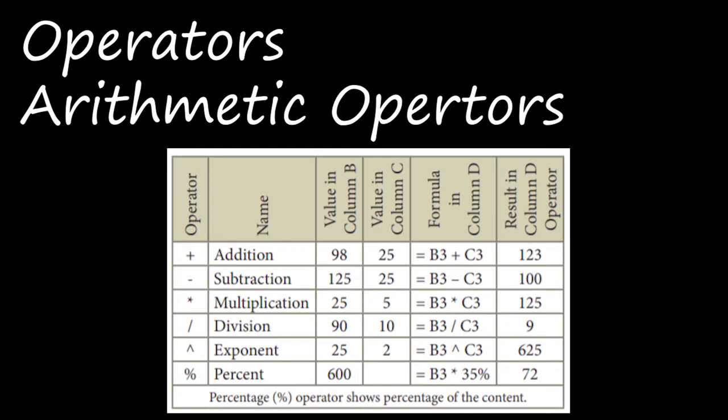The formula in column D is given as equal to B3 plus C3. So equal to B3 plus C3 means 98 plus 25 - we are giving the address of the cell. 98 is located in B3 and 25 in C3. So B3 plus C3 means 98 will be added with 25 and the result is 123. Same way subtraction, multiplication, division - we all know these.